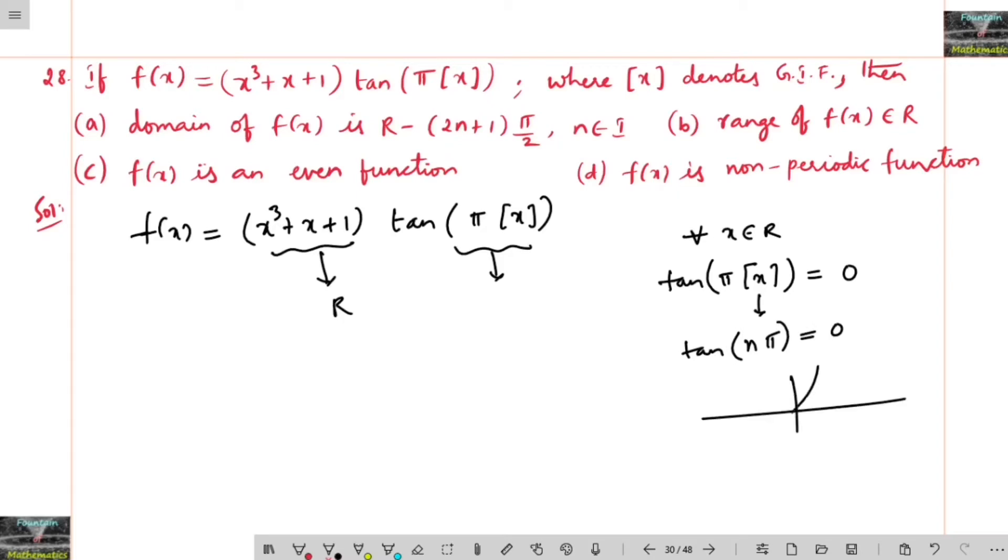You can see the graph also. This is 0, and this is π, and this is 2π, and this is -π. So everywhere we can find that for all integral multiples of tan, the answer is 0 for any value.